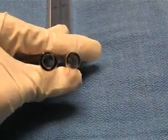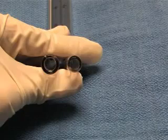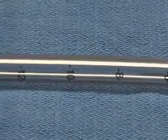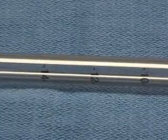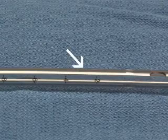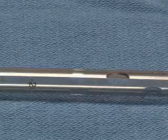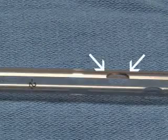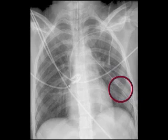The chest tube is sized according to its internal diameter. The length of the tube is marked with numbers to indicate distance into the chest wall. Additionally, there are several drainage holes at the distal end. A radio-opaque stripe runs along the length of the tube and outlines the most proximal drainage hole.